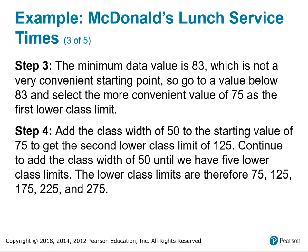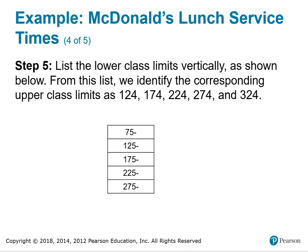We go to a value below 83 and select a more convenient value of 75 as the first lower class limit. Add the class width of 50 to the starting value of 75 to get the second lower class limit of 125. Continue adding the class width of 50 until we have five lower class limits: 75, 125, 175, 225, and 275.